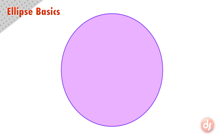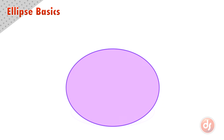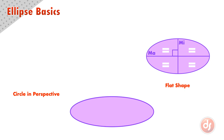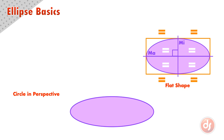We can also perceive an ellipse as a circle that has been tipped in space. When we perceive the ellipse as a circle in perspective, some strange things happen. Remember, the ellipse perceived as a flat shape had the major and minor axes crossing in the center, creating equal quadrants. If we put a rectangle around the flat shape, the major and minor axes would also divide the rectangle in half, creating four equal sections.